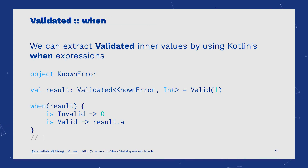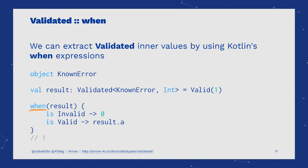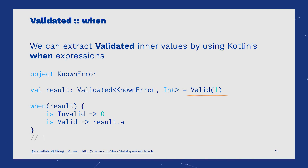We can extract Validated inner values by using Kotlin when expressions. In this case, you can see how the result value will be of type Validated. It can be easily placed in our own expressions, and then we can branch out logic based on the Valid and Invalid cases.